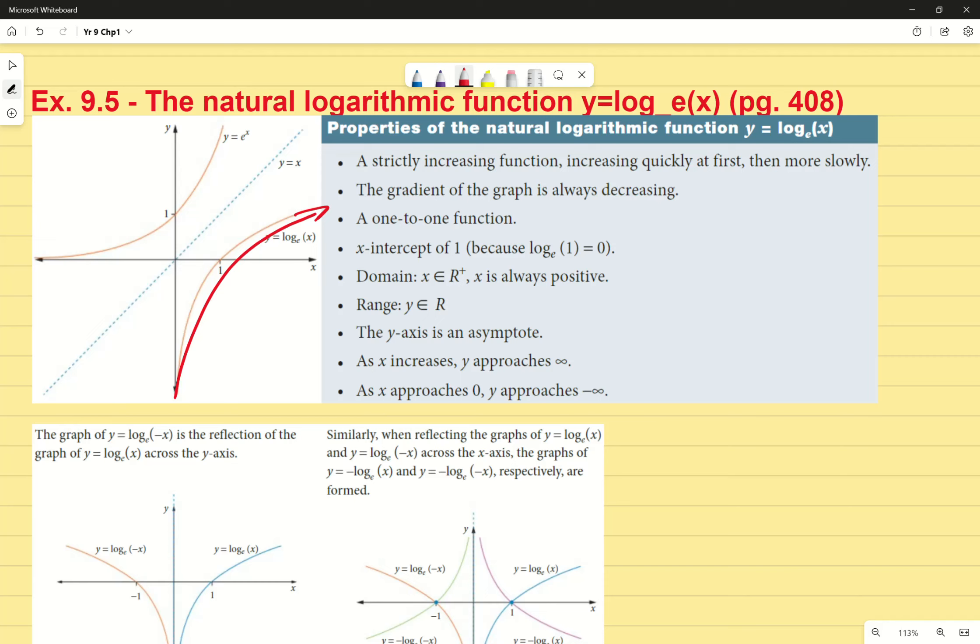The gradient of the graph is always decreasing, so we start off extremely positive, it becomes slightly less positive, less positive, but it's still always decreasing. At no point should the function ever flip back on itself, so the function should never be able to go backwards like this. It's always going to have a decreasing gradient, but it's never going to have a negative gradient.